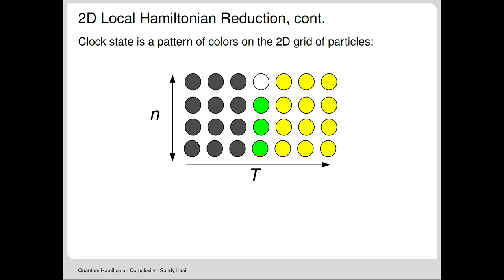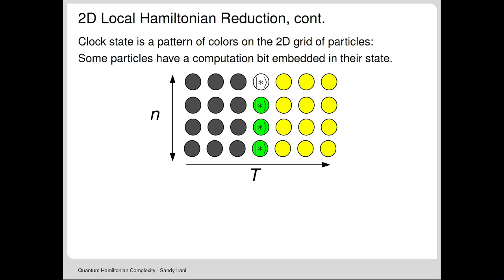This white particle is like a cursor—I make sure the clock terms only apply if there's a white particle in the picture. Because we're in the third layer, the particles encode the value of a qubit: the white state has white-zero and white-one; the green state has green-zero and green-one. This encodes an n-qubit register in a vertical column. Some states are done, some have yet to trigger.